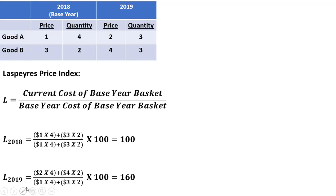Moving on to 2019, the current cost of the base year basket uses the prices in the current year, 2019, of $2 and $4, multiplied by the fixed basket from 2018. So 2 times 4 and 4 times 2. In the denominator, it's the base year cost of the base year basket using prices of $1 and $3 multiplied by the base year basket. When we do that, we get 8 and 8, giving us 16 over 10, so an index of 160.